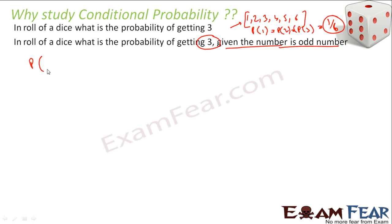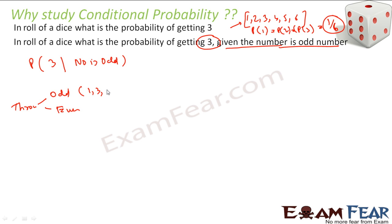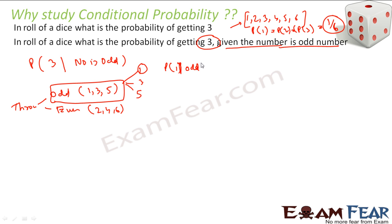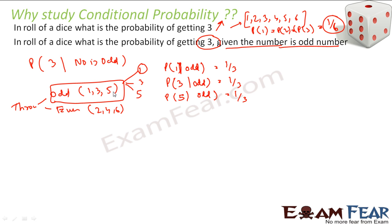It is given that the number is odd. That means you throw a die and get either odd or even. Odd can be 1, 3, 5; even can be 2, 4, 6. Now I am told the number is odd, so my sample space is only 1, 3, 5. Therefore, the probability of getting 1 given number is odd is 1 by 3, probability of getting 3 given number is odd is also 1 by 3, and probability of getting 5 given number is odd is also 1 by 3. The answer changes — in the first case no condition gave 1 by 6, but with the condition that the number is odd, it becomes 1 by 3. This is another example of conditional probability.